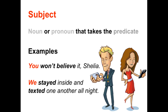'We stayed inside and texted one another all night.' In the second sentence, we have two predicates: 'stayed' and 'texted.' So we ask ourselves, who stayed and texted? And in this sentence, the pronoun 'we' stayed and texted, which makes 'we' the subject of this sentence.